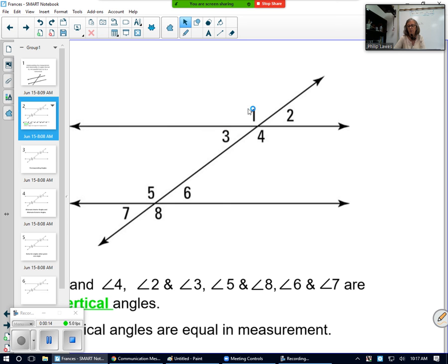For convenience, we're going to number the angles that are formed when two parallel lines are cut by a transversal. The numbers are already filled in right here.